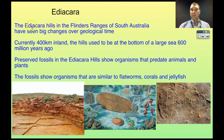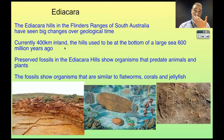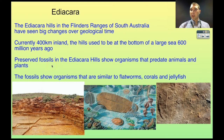Let's look at an Australian example. The Ediacara Hills, found in the Flinders Ranges about 600km north of Adelaide, have seen big changes over geological time. At the moment they're about 400km away from the sea, but they used to be at the bottom of a large sea about 600 million years ago. There are weird preserved fossils here called the Ediacaran biota — organisms that predate animals and plants, with body plans we don't see anymore. These predate the Cambrian explosion, and show organisms similar to flatworms, corals, and jellyfish.